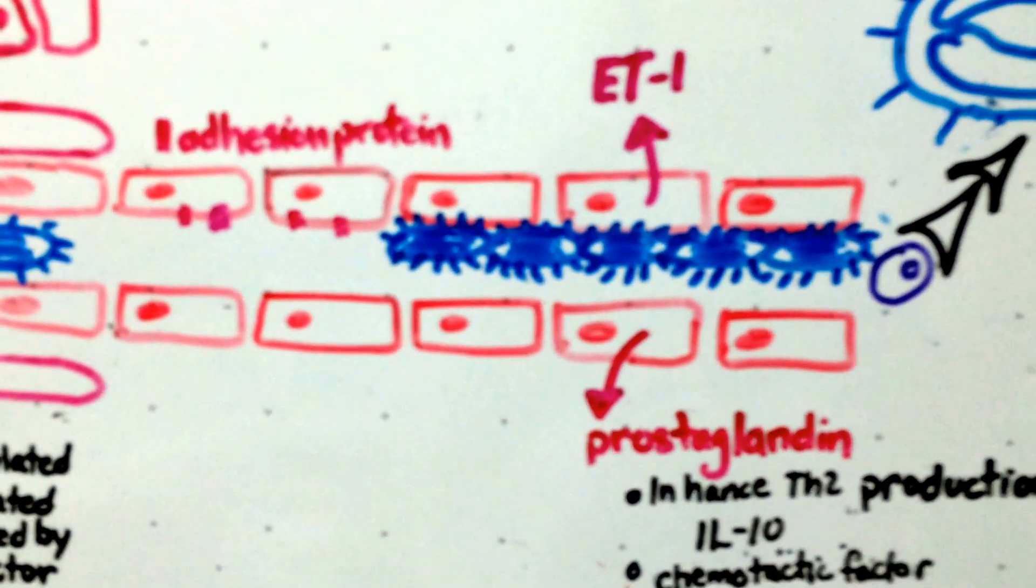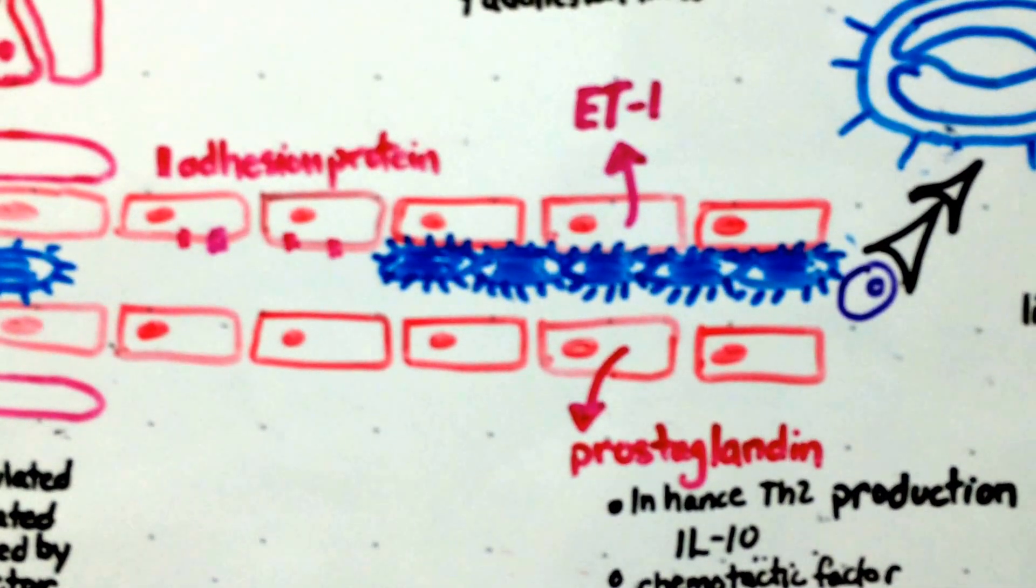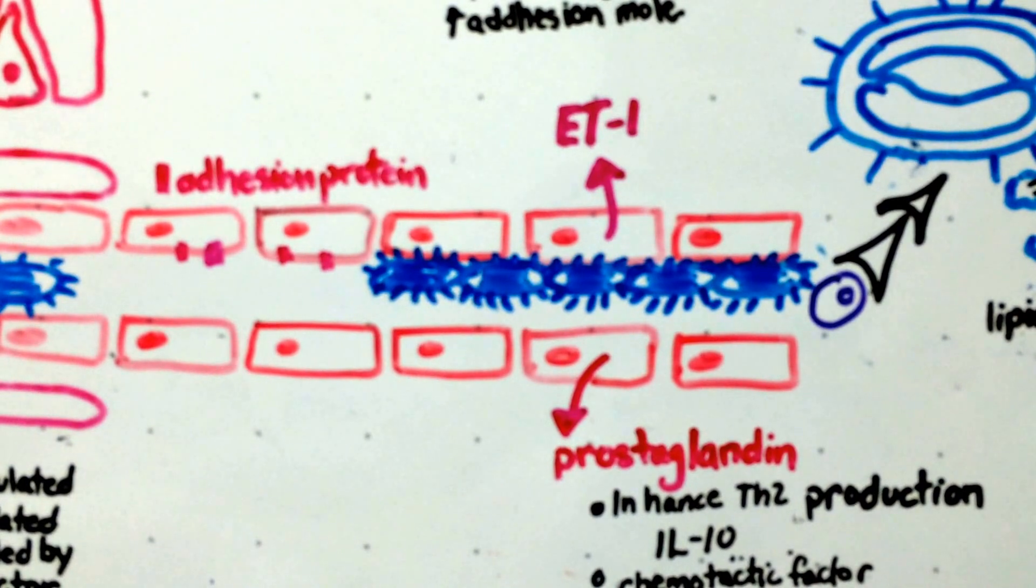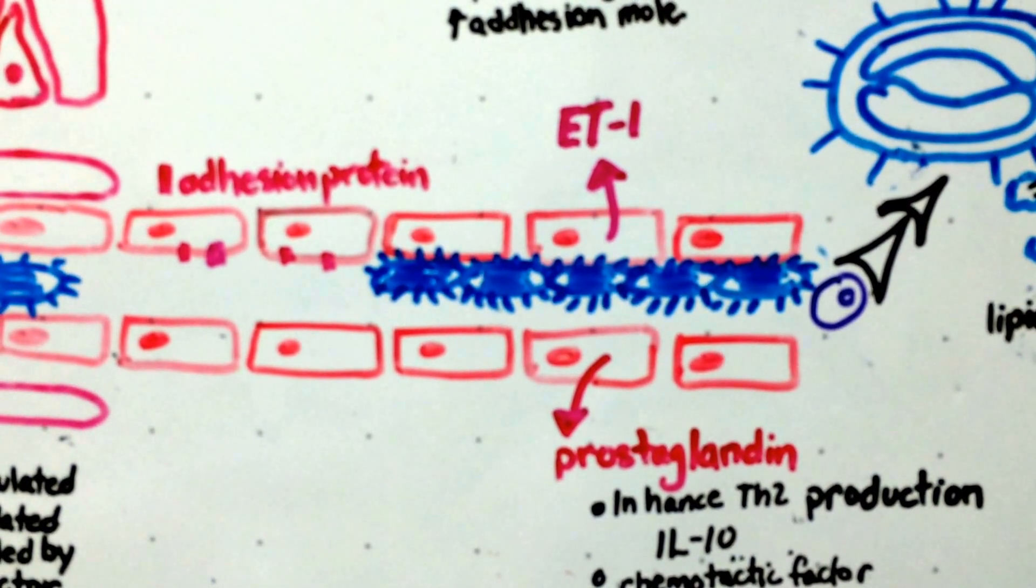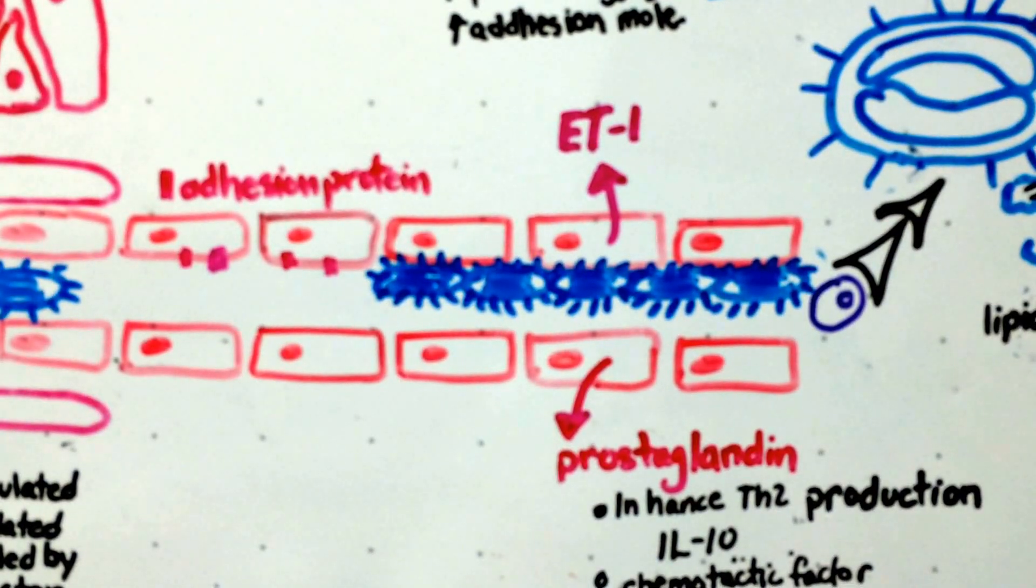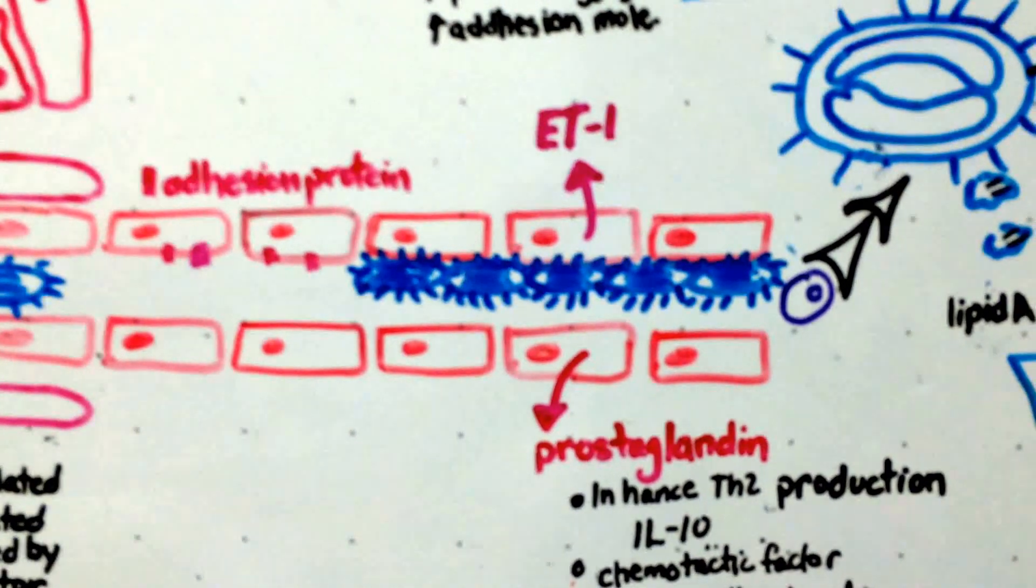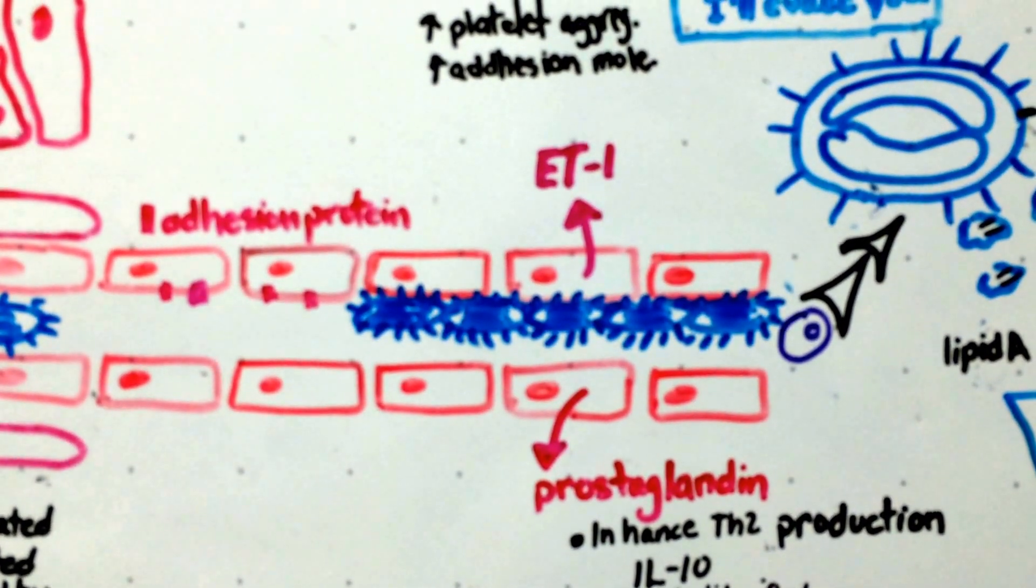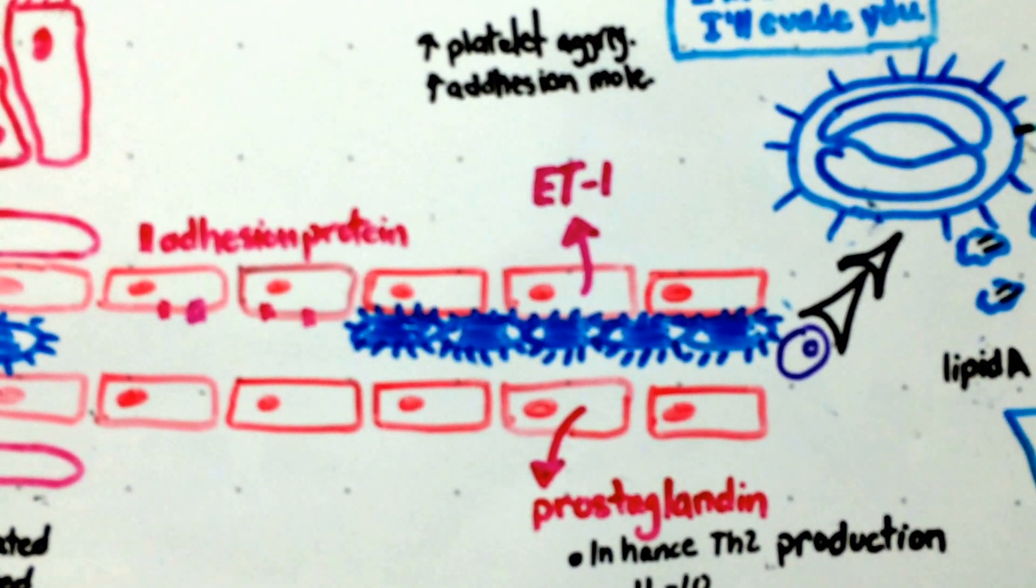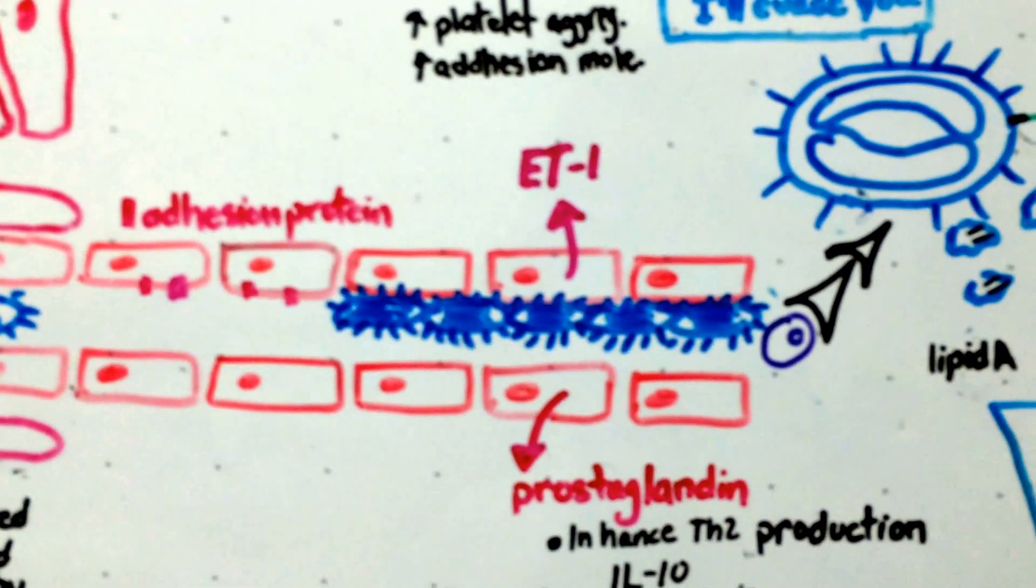The release of interleukin 10 and prostaglandin inhibits Th1 cells, so helps to shift from a Th1 to a Th2 environment. Prostaglandin is also a chemotactic factor calling in lots of neutrophils. And the neutrophils call in more cells of the immune system and they're all releasing lots of cytokines causing inflammation and vasodilation.